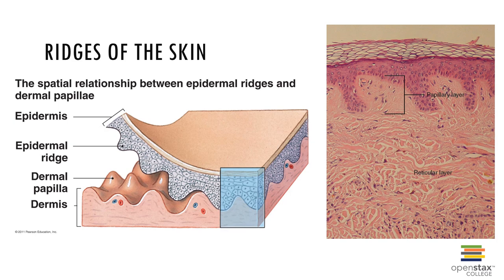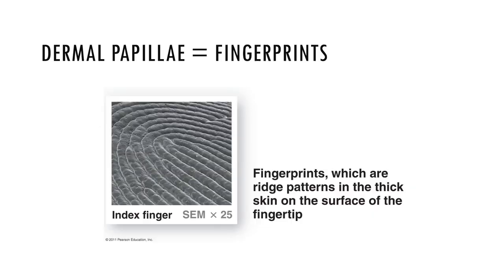The deeper layers of the epidermis form epidermal ridges which extend into the dermis, adjacent to dermal projections called dermal papillae that project upward into the epidermis. These ridges and papillae greatly increase the surface area for attachment, firmly binding the epidermis to the dermis. The patterns of dermal papillae in the thick skin on the surface of the fingertips produce fingerprints, which can be used to identify individuals in criminal investigations.